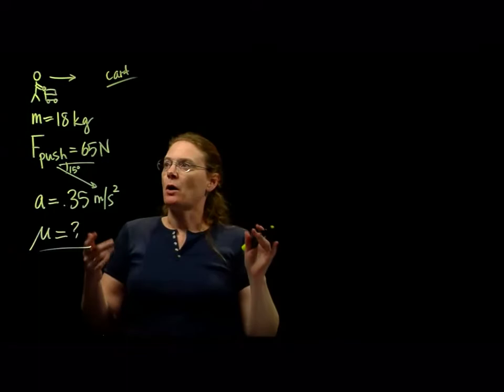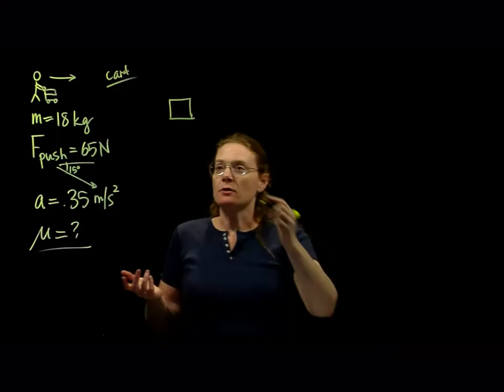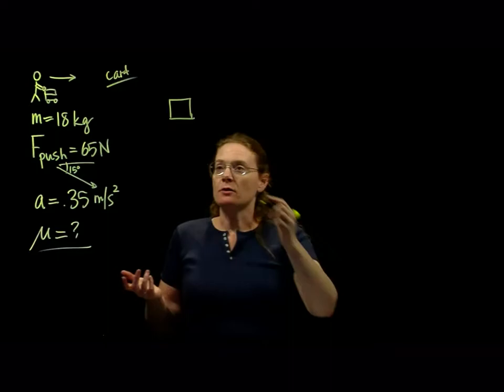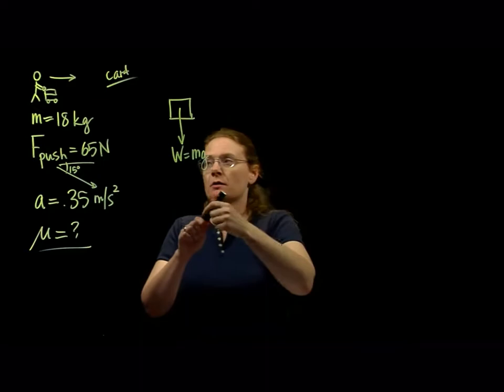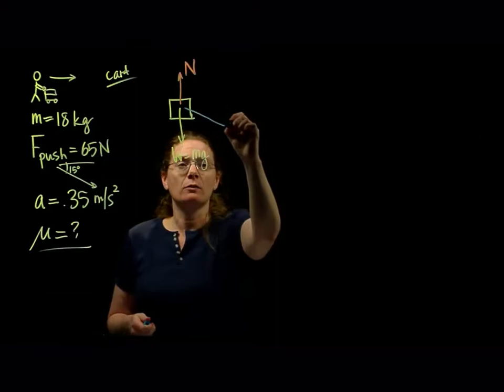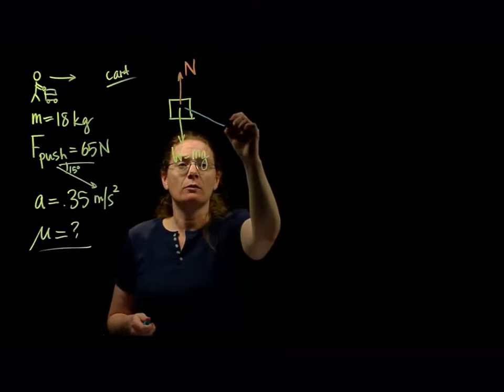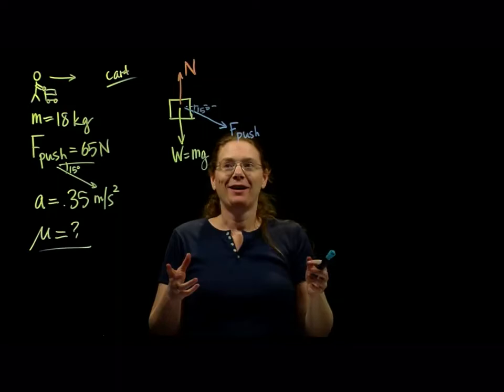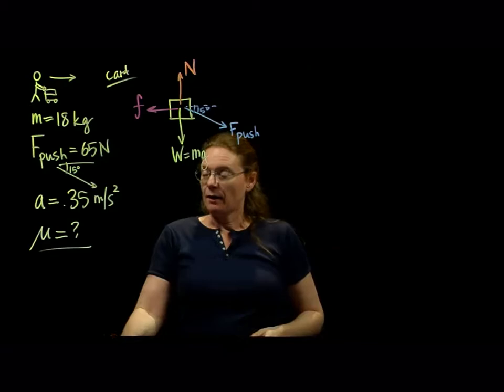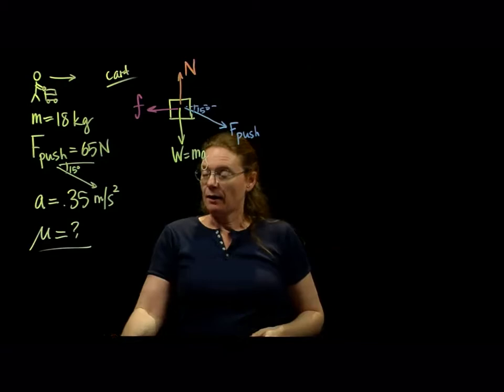Draw a force diagram for the object of interest. We're going to draw forces acting on the cart. Start with the one that's always there: we have our weight, the force of gravity pulling down, which is mass times gravity. The ground is pushing up on the cart so it doesn't fall — that's our normal force, perpendicular to the surface. We're pushing on it, but it's not a push straight, it's a push down at an angle of 15 degrees. And there better be a frictional force, since we're looking for the coefficient of friction, opposing the motion. We have these four forces.